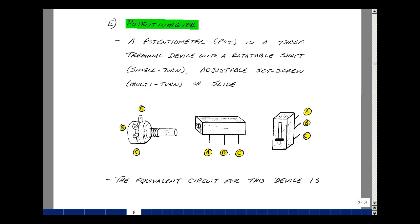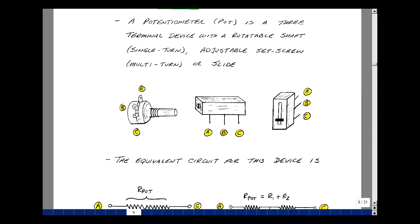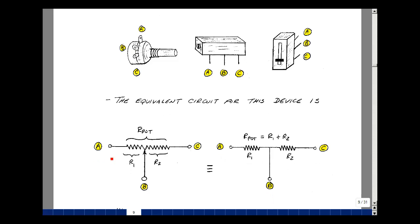What's the equivalent circuit of a pot? Well, in ECE 201, we have the following. We turn terminals A and C, there's a total resistance, this is the track, and then we're tapping off part of that. As an equivalent circuit, we can then write this as just a three-terminal device where I've got a resistance, I'll call it R1 here and R2.